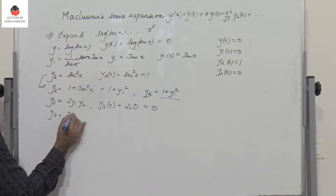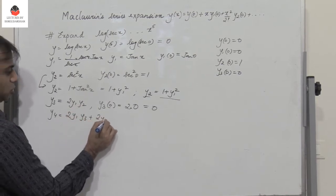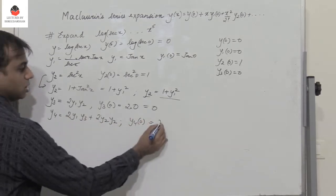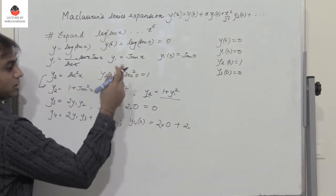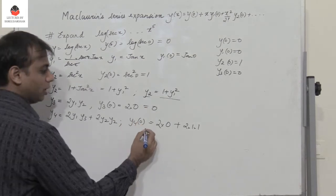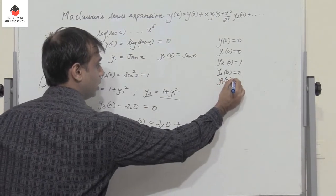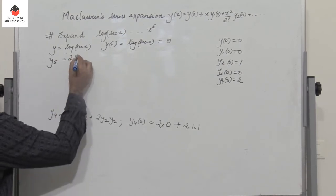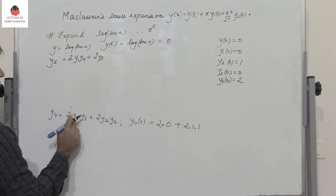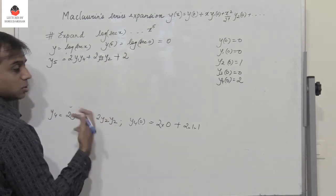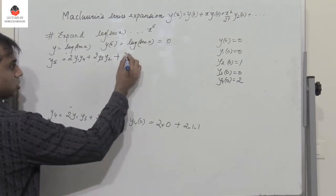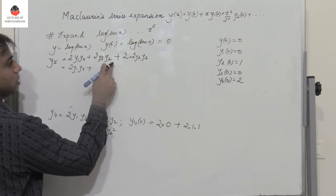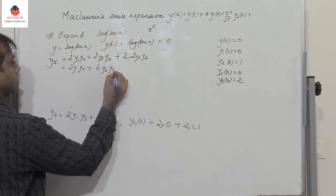Next, differentiating y₃ = 2·y₁·y₂ gives y₄ = 2·y₁·y₃ + 2·y₂². Put x = 0: y₄(0) = 2 · 0 · y₃(0) + 2 · (1)² = 2. So y₄(0) = 2. Differentiating again: y₅ = 2·y₁·y₄ + 6·y₂·y₃.